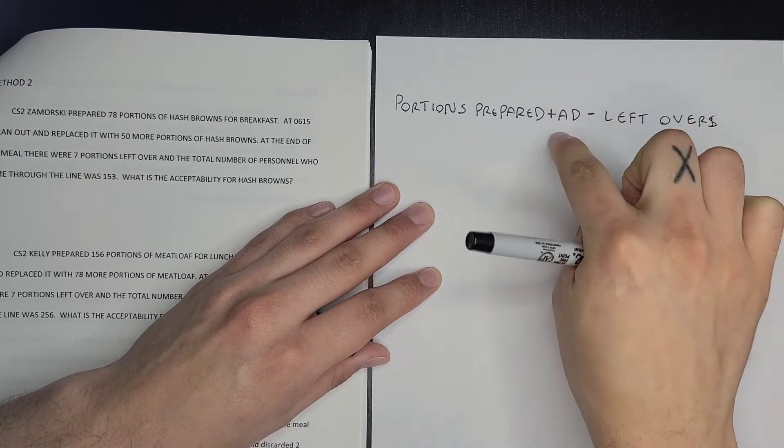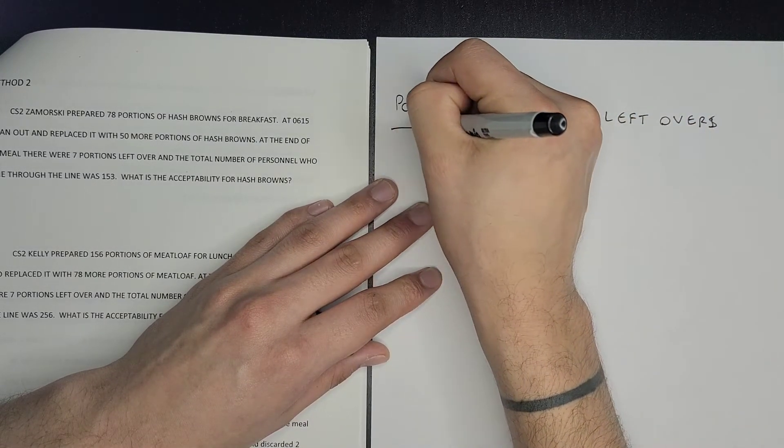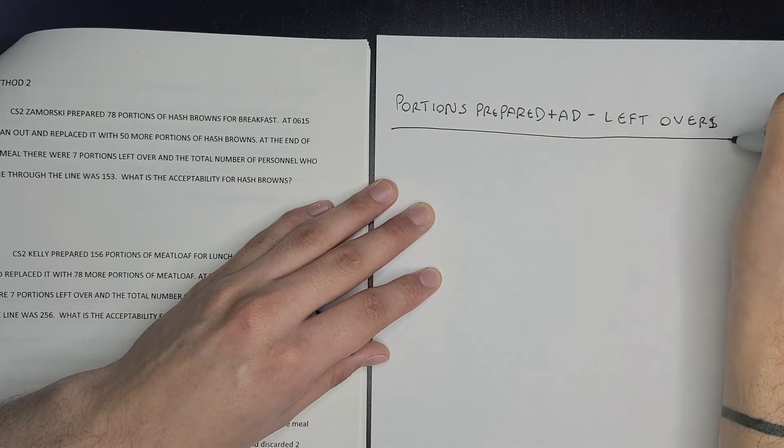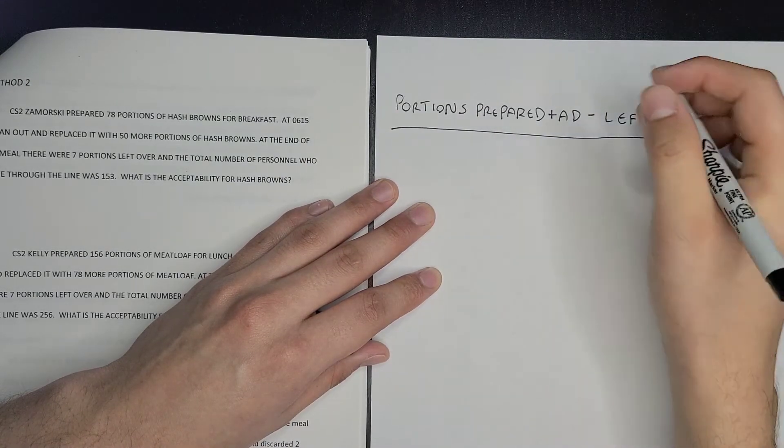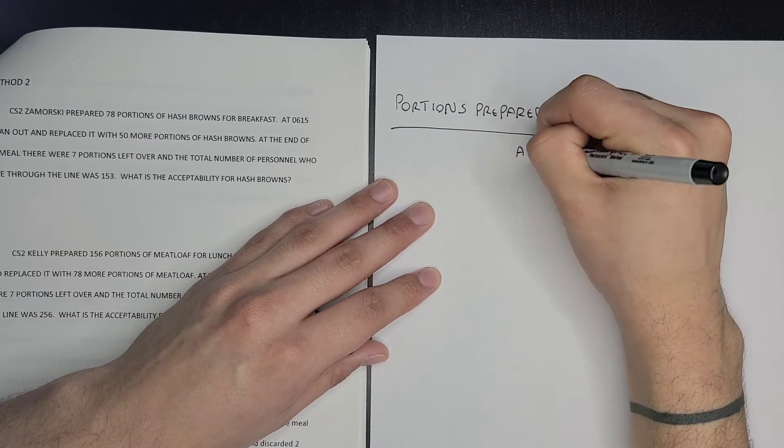So your additional is going to be how many more portions you made of that same product. So then you're divided by your head count or your actual feed.